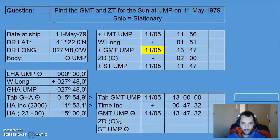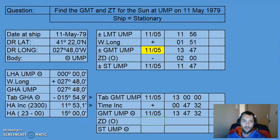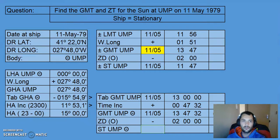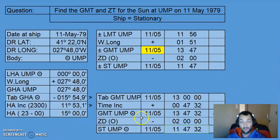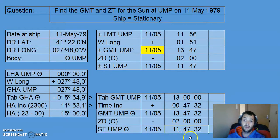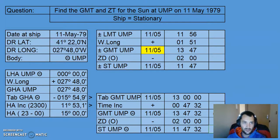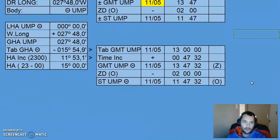The ship is 2 hours behind Greenwich in time zone Oscar. The zone difference for Oscar is minus 2. We subtract again because we're going from Greenwich back in a westerly direction to the vessel, which is keeping Oscar time. That minus 2 hours gives us the final time of Upper Meridian Passage at the ship: 11th of May, 11:47:32, time zone Oscar.